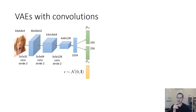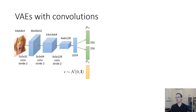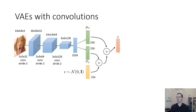Then you sample normally distributed epsilons — a vector where every entry is sampled from a normal distribution with mean zero and variance one. The length of this vector needs to match the dimensionality of z, so it's 256. You multiply epsilon by sigma and add mu to get z, which also has dimensionality 256. This is your bottleneck representation.